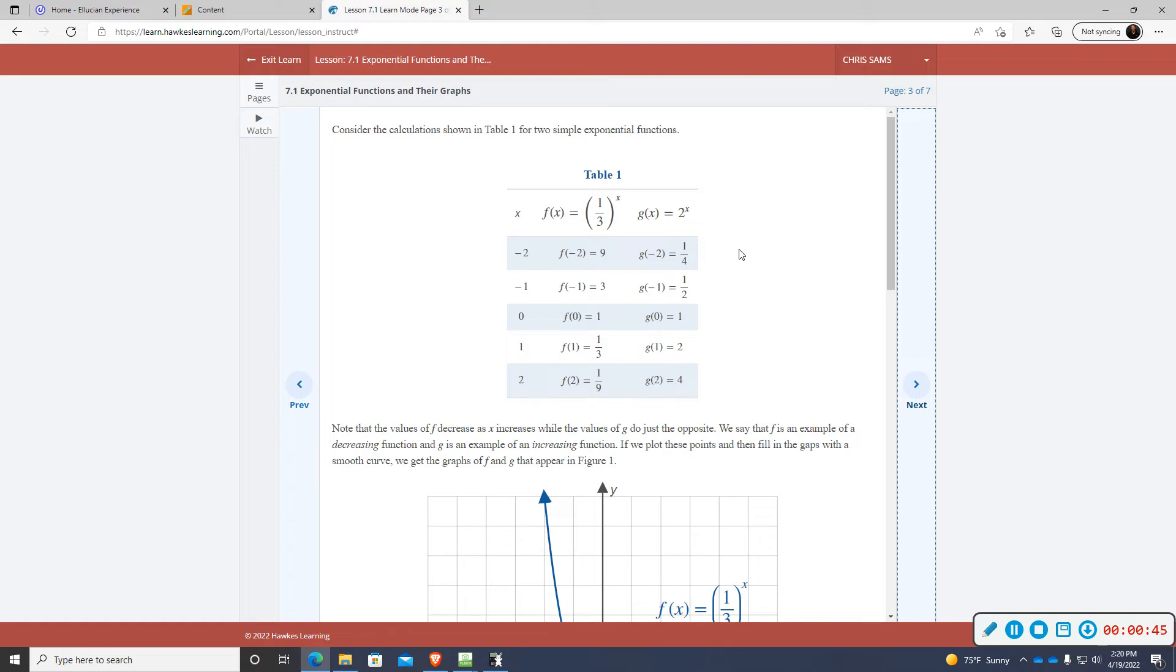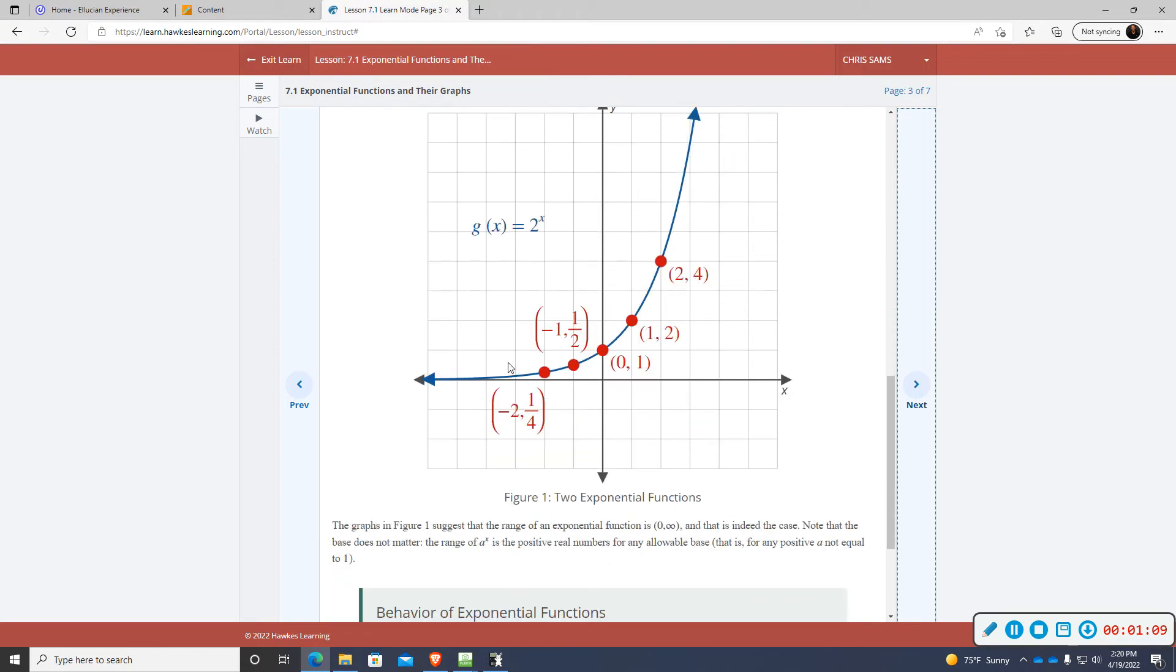There are two types of exponential equations. Primarily, they are growth and decay. One is increasing and one is decreasing. If your base, the number that has the exponent x as a variable, if that number is any number larger than one, your graph will be exponential growth, which means it will be increasing. This blue line right here going from left to right, it is increasing.